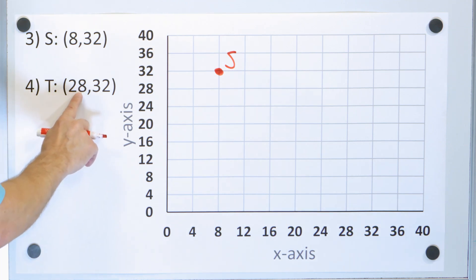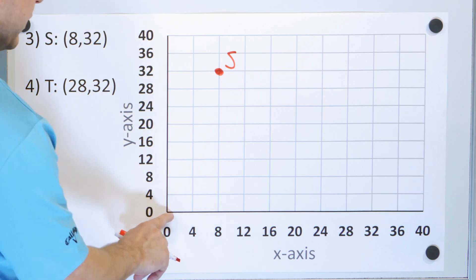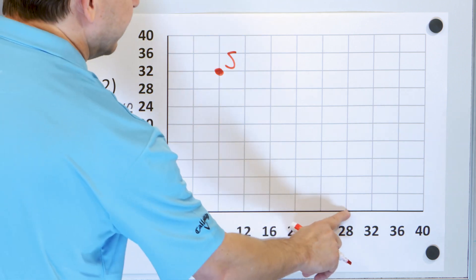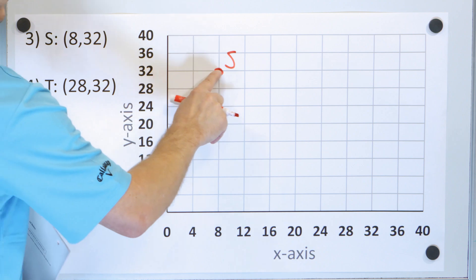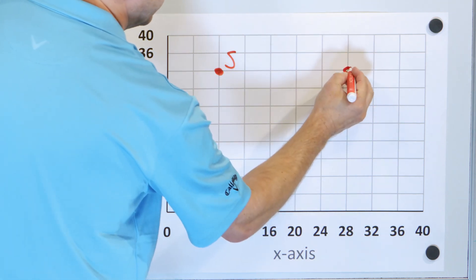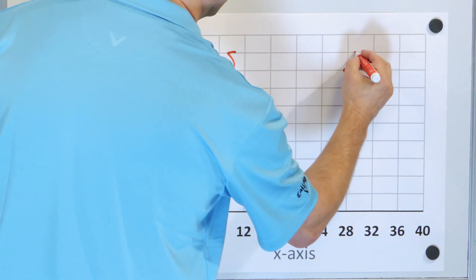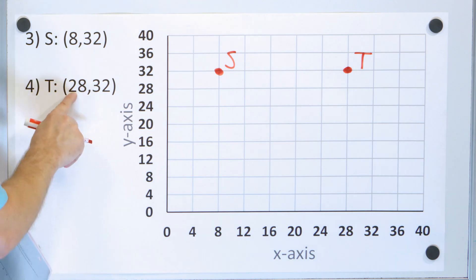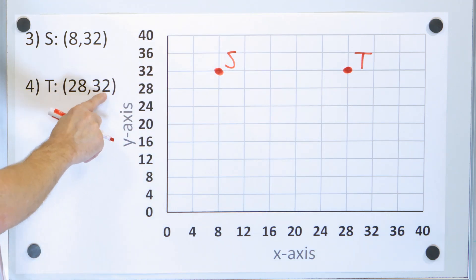Next point is T at 28 comma 32. X is 28, so we go over to 28 for x, and then I go up to 32 for y. So 28 comma 32 is this point right here, and the label is point T. Checking ourselves: 28 first for x, then 32 for y.